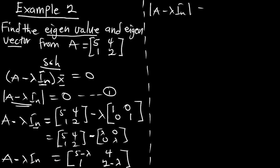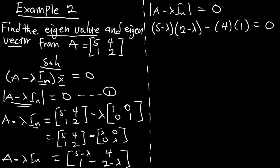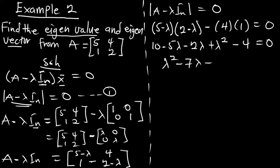Now that we have this, we must find the determinant of the matrix A minus lambda I_n and equate it to zero. To find the determinant of this matrix: (5 minus lambda)(2 minus lambda) minus 4 times 1 equals zero. Expanding: 10 minus 5 lambda minus 2 lambda plus lambda squared minus 4 equals zero.